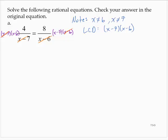So I'm left with x minus 6 times 4, and applying the distributive property, that's 4x minus 24. On the right-hand side, I'd have 8 times x minus 7, and that's 8x minus 56.